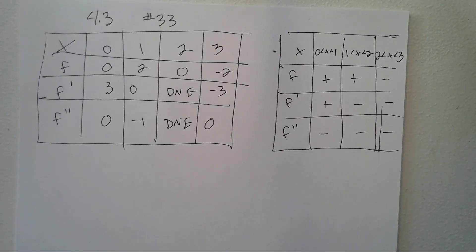Problem 4.3 number 33 says: find the absolute extrema of F and where they occur, find any inflection points, sketch a possible graph of F. I'm going to start by making a graph of F, and then based off the graph we should be able to answer the questions a little easier.